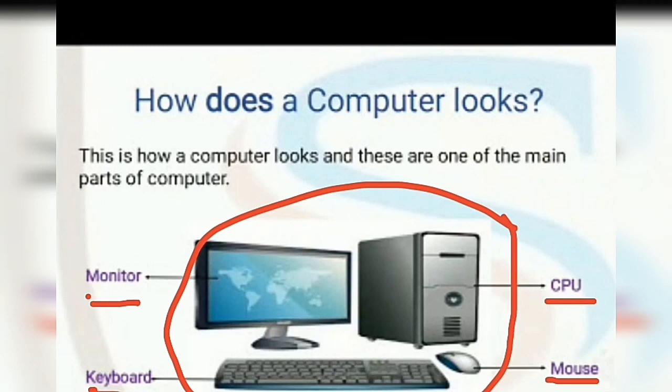Number one is Monitor. Number two is Keyboard. Number three is CPU. Number four is Mouse. I hope everybody understands — there are four parts of the computer: Monitor, Keyboard, CPU, and Mouse.